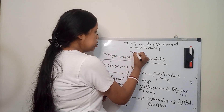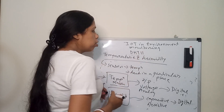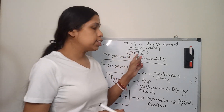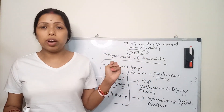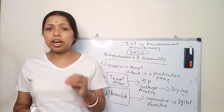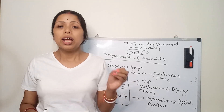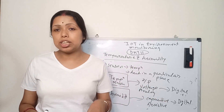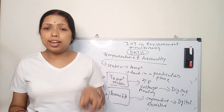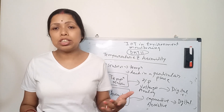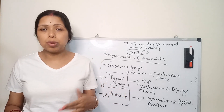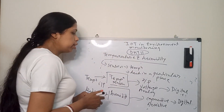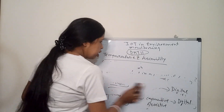The DHT11 is one of the most common temperature and humidity sensors. In the DHT11, a thermistor is present for measuring temperature and a capacitive sensor is present for measuring humidity. A higher version, the DHT22, is also available which can give higher accuracy of temperature and humidity data.